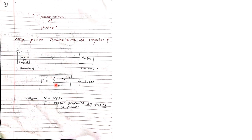Power depends upon speed and torque, and the formula is P equals 2πNT divided by 60, where N is the RPM (rotations per minute) and T is torque in Newton-meters.